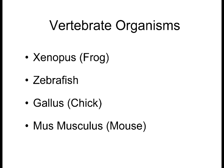Vertebrates: frogs are holoblastic; zebrafish and chick (Gallus) are meroblastic; and mice, humans, and other mammals are all holoblastic.